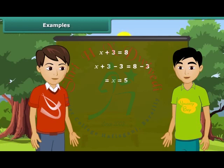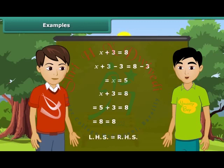It is because subtracting 3 reduces the LHS to x. Are you sure that this answer is true? We can check this by placing the answer in place of x. If left hand side is equal to right hand side, then the answer is correct. We can see that here LHS left hand side is equal to RHS right hand side. Hence our answer is correct.